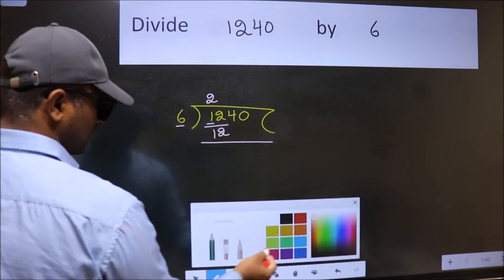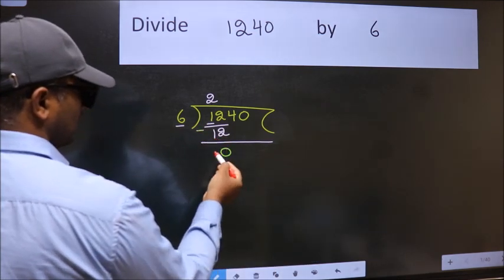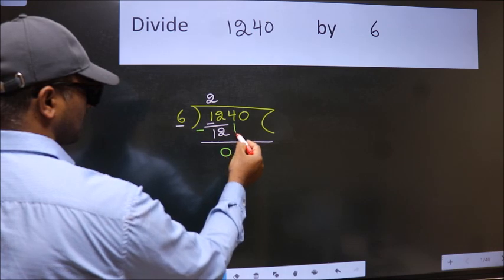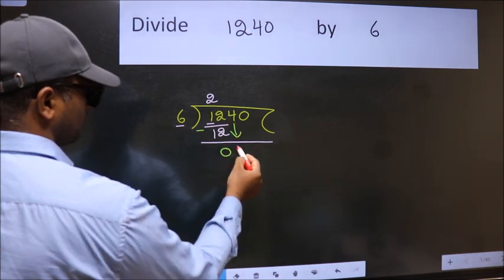Now we should subtract. We get 0. After this, bring down the beside number. So 4 down.